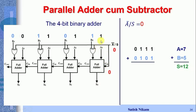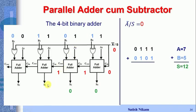For the first full adder: A0=1, B0=1, C-in=0, giving sum S0=0 and carry=1. That carry goes to the next full adder: A1=1, B1=0, C-in=1, giving S1=0 and carry=1. Next: C-in=1, A2=1, B2=1 — all three bits are 1, giving S2=1 and carry=1.